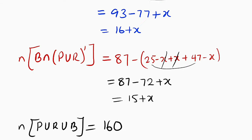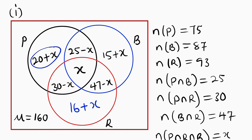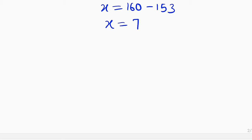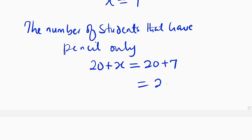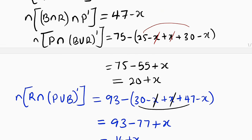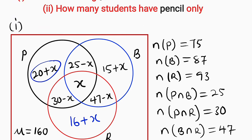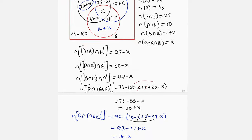So X equals 7. To solve question 2, the number of students that have pencil only is 20 plus X, which equals 20 plus 7, and finally equals 27. So 27 students have only a pencil. Thank you for watching. Do share with your learning colleagues, and don't forget to subscribe to my YouTube channel for more exciting videos.